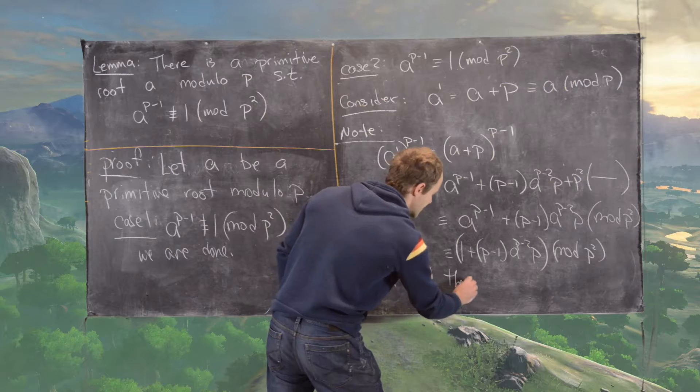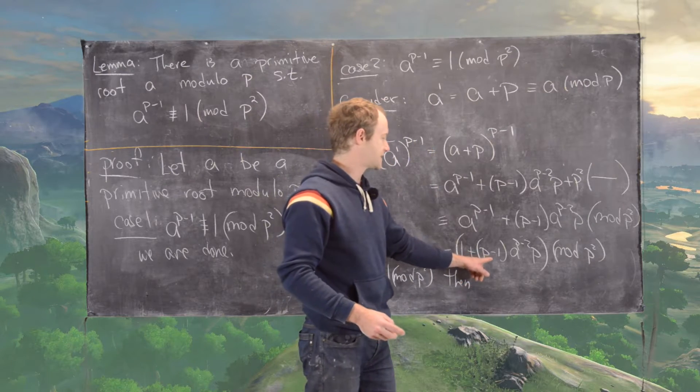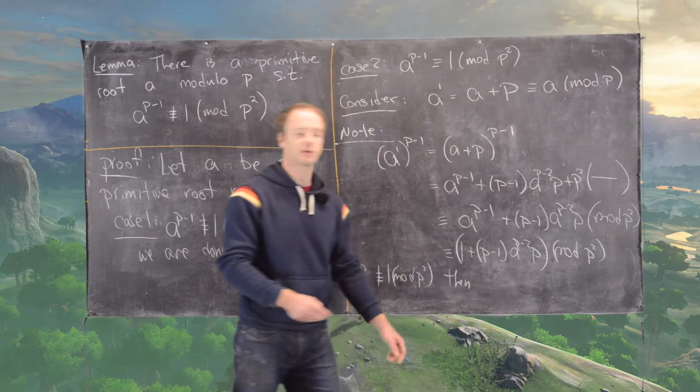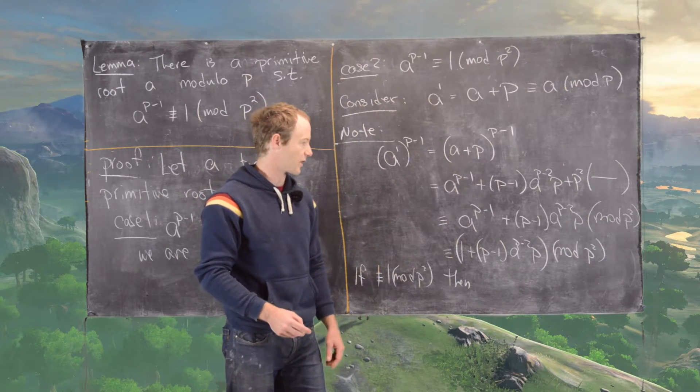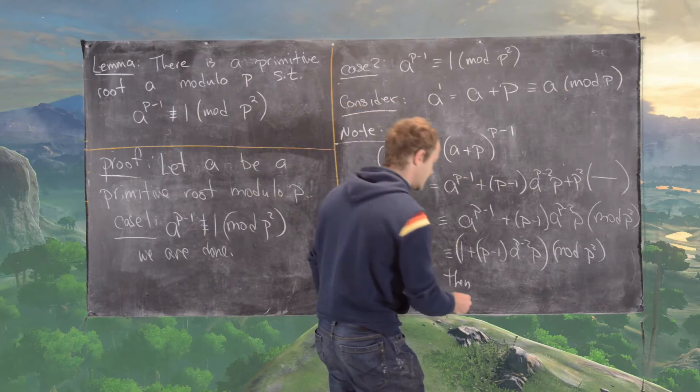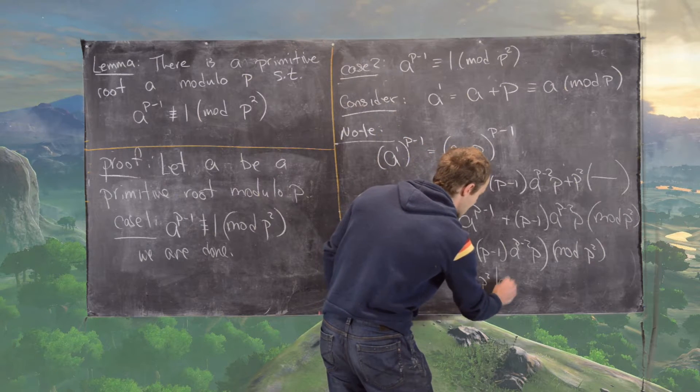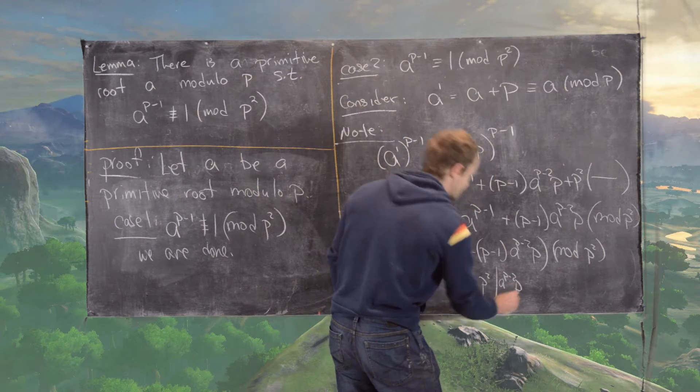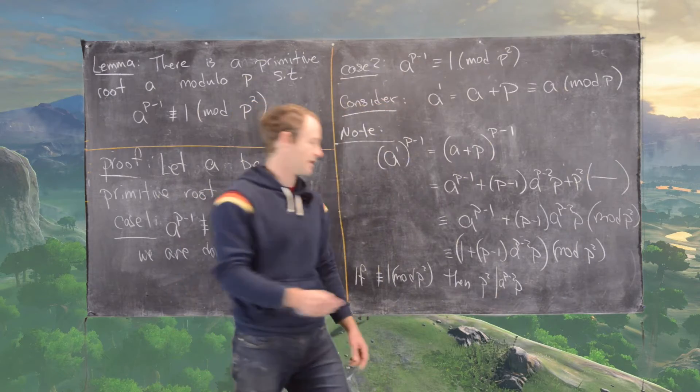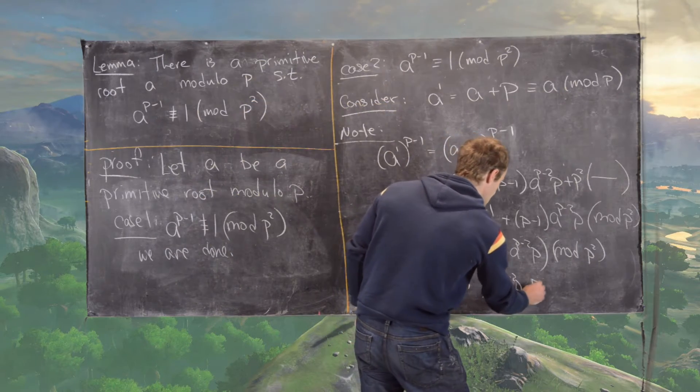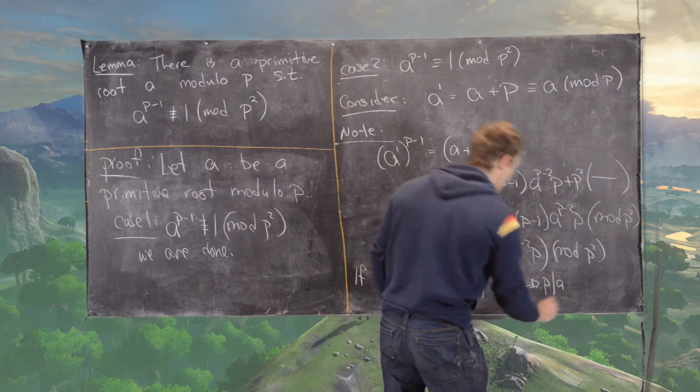So if this whole thing is congruent to one mod p squared, then we know that p minus one and p are relatively prime, which means p minus one and p squared are relatively prime, which would tell us that p squared has to divide a to the p minus two times p. But it follows from that that p has to divide a.